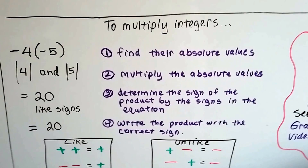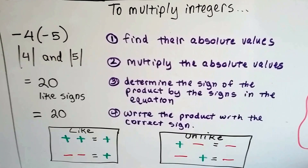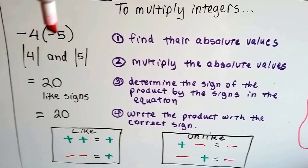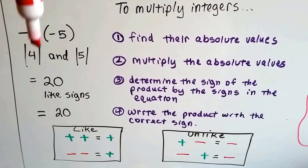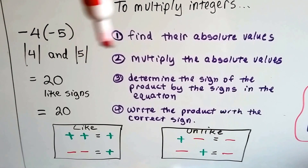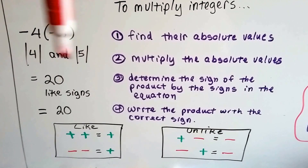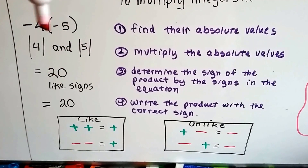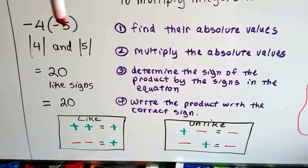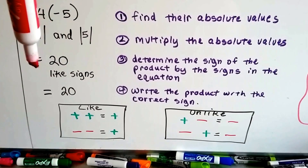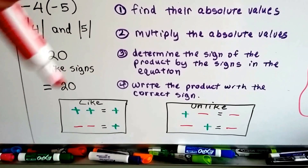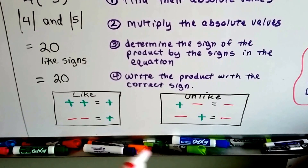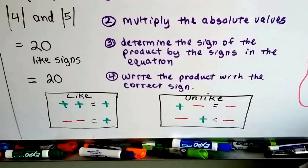To multiply integers, you find the absolute value. So if you have negative four and negative five, the absolute value of negative four is four, and the absolute value of negative five is five. We multiply those absolute values: four times five is twenty. We determine the signs by looking at the equation — they're like signs, both negative, so it's going to be a positive twenty. We write the product with the correct sign. If the signs are the same, it's a positive answer; if the signs are different from each other, it's going to be a negative.